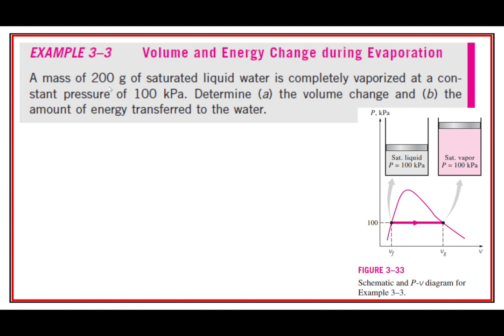We have the volume and energy change during evaporation. A mass of 200 grams of saturated liquid is completely vaporized at a constant pressure of 100 kilopascals. That is actually something that is possible, but you have to add heat to keep it at the same pressure. It would also be the same temperature.